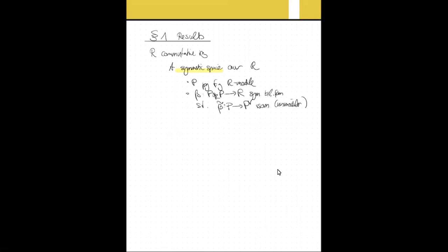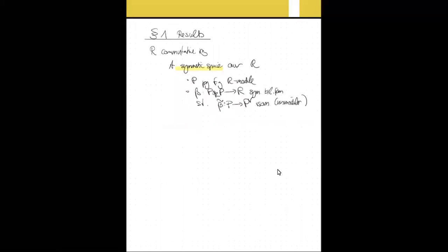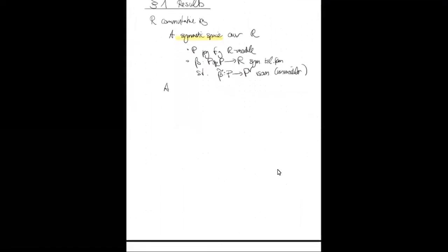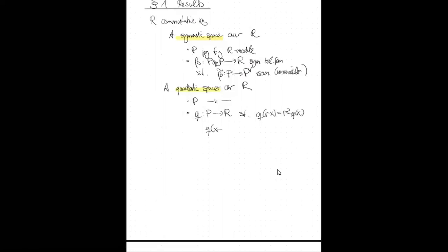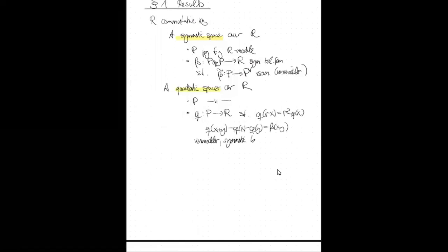There's also a quadratic analog: a quadratic space over R. It has the same P — a finitely generated projective module — and then a quadratic form, a map Q from P to R as a map of sets, such that Q(rx) = r²·Q(x), and the polarization Q(x+y) − Q(x) − Q(y), which we call beta(x,y), is a unimodular symmetric bilinear form.